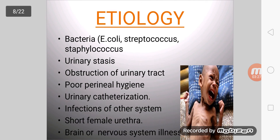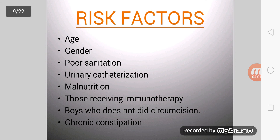The etiology of UTI includes E. coli, Streptococcus, and Staphylococcus. Additional etiological factors include urinary stasis, obstruction of the urinary tract, poor perineal hygiene, urinary catheterization, infection from other systems, and short female urethra. These are the main causes of UTI.